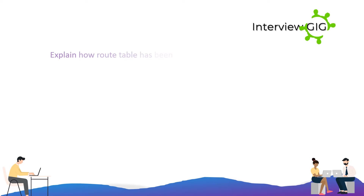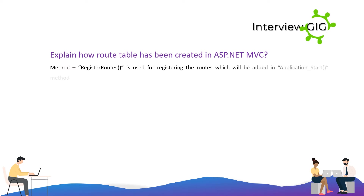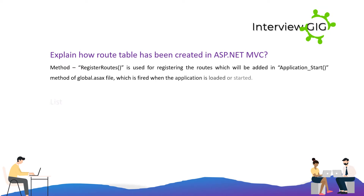Explain how the route table has been created in ASP.NET MVC. The method RegisterRoutes is used for registering the routes, which will be added in the Application_Start method of the Global.asax file, which is fired when the application is loaded or started.